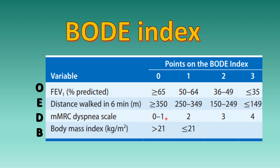MMRC scale: 0 to 1 scores 0, MMRC 2 scores 1, MMRC 3 scores 2, and MMRC 4 scores 3. Body mass index: any weight less than 21 is given 1 point.